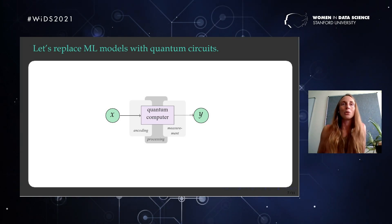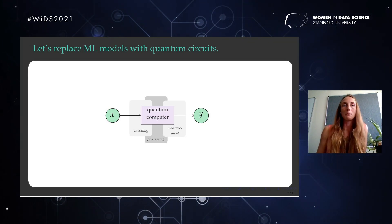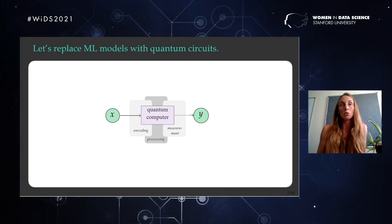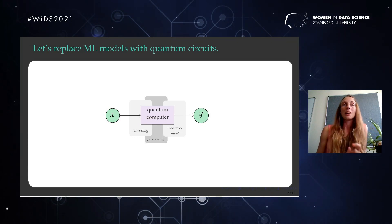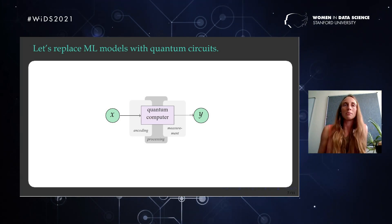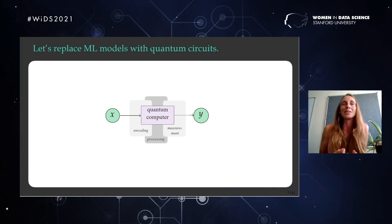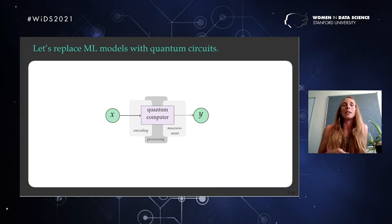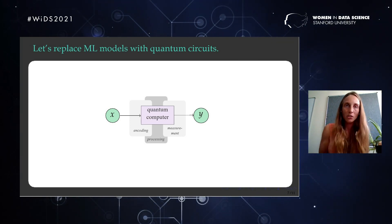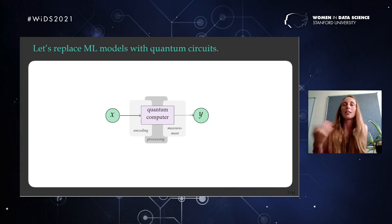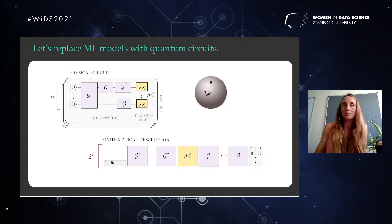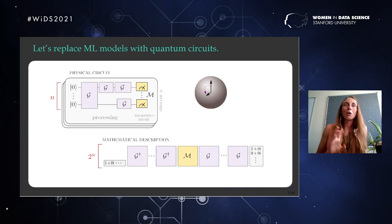Now, what happens if we take those model classes and replace the model with a quantum computation? The first thing we have to do is encode our data into the quantum computer, at least if we do supervised learning where models are functions that map from inputs to outputs. The quantum computer itself then does the processing — your quantum algorithm. Quantum theory always ends with a measurement, so your quantum computation doesn't end with a bit but with a measurement. You then take the expectation of the measurement — your average result — and use it as a prediction.